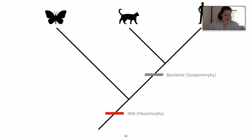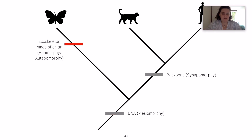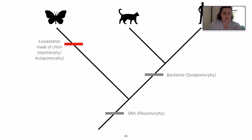DNA is shared between all of these creatures — the cat, the butterfly and the human — and is known as a plesiomorphy, which is an ancestral or primitive state or character. Butterflies have exoskeletons made of chitin, known as an apomorphy or autapomorphy. An apomorphy is a derived or specialist character unique to that clade, and an autapomorphy is an apomorphy unique to a single group.